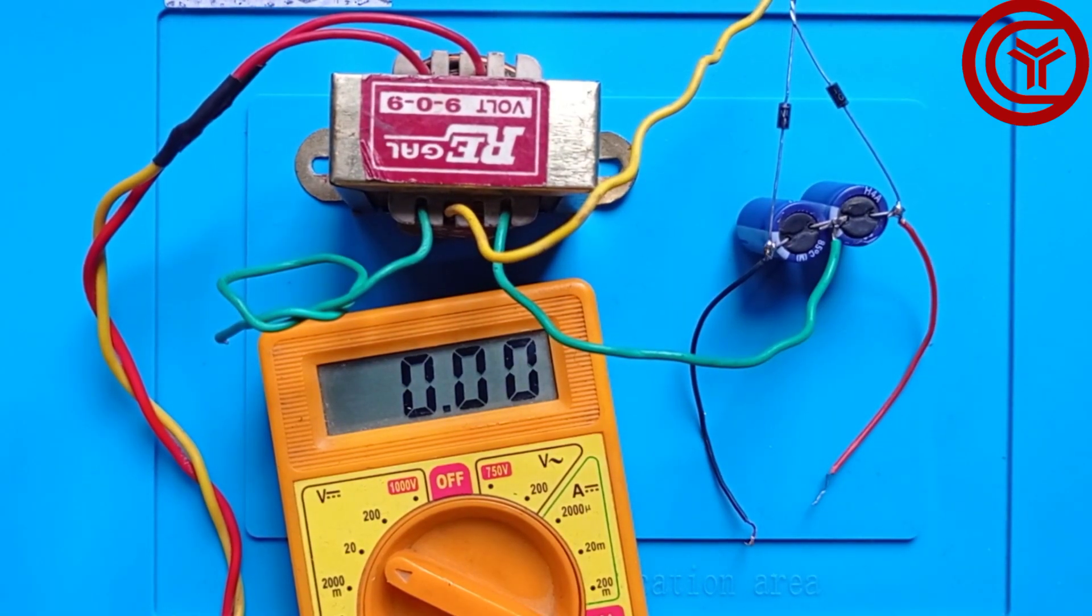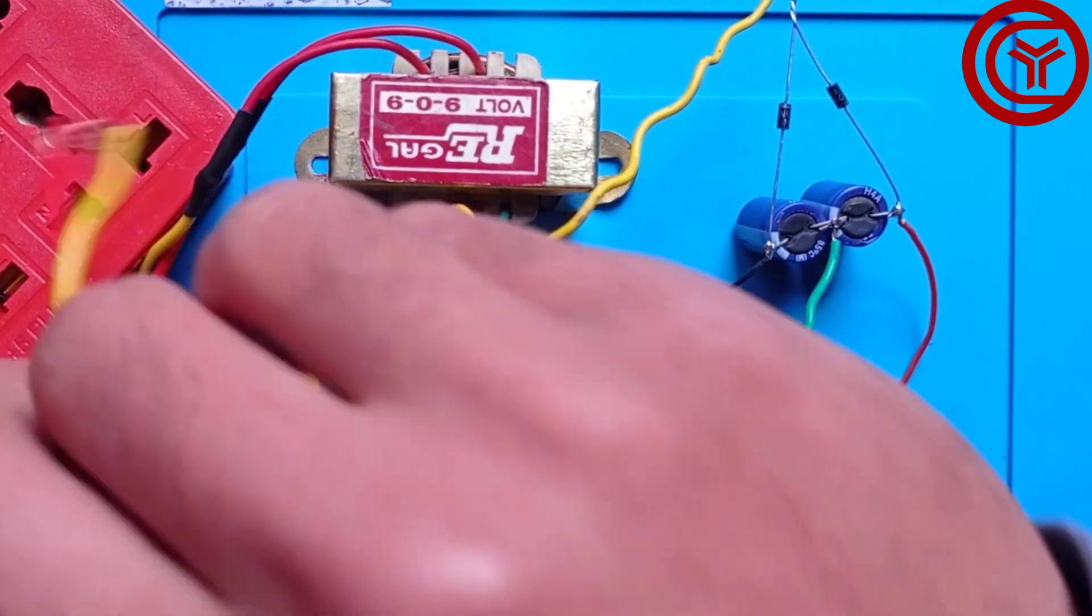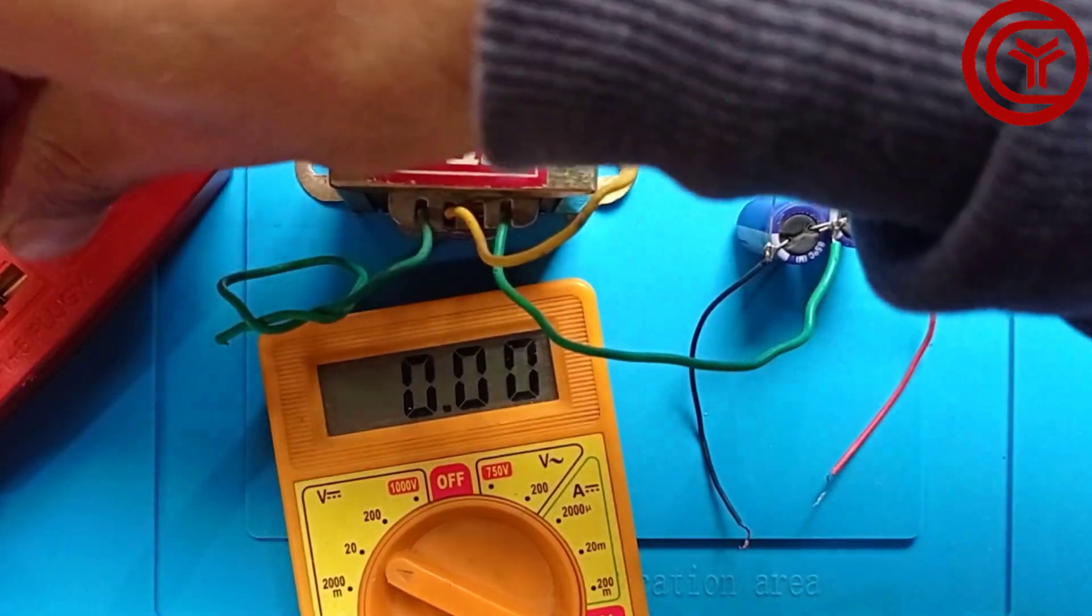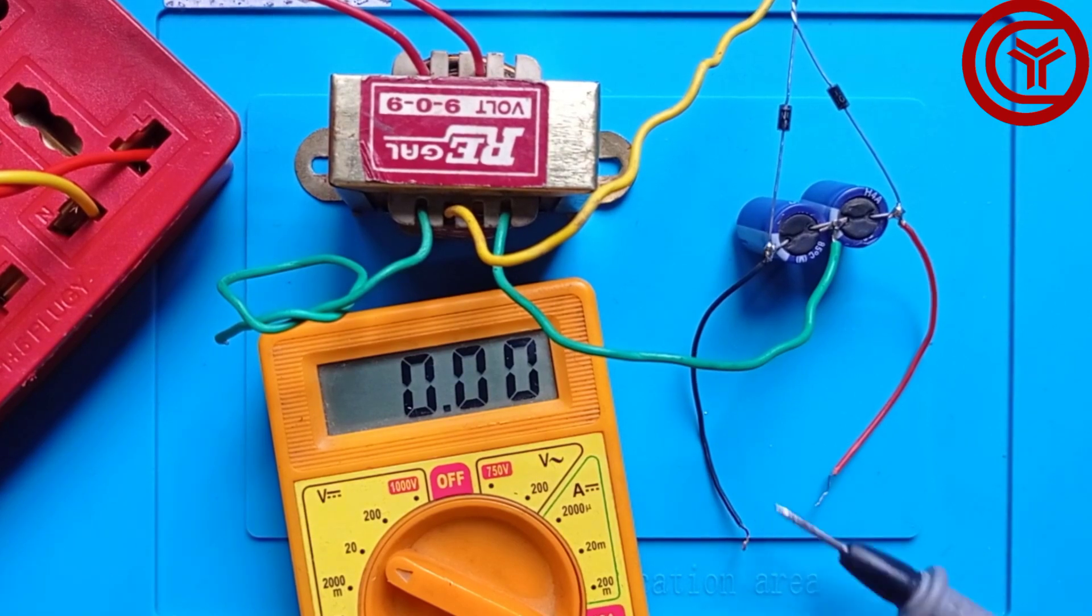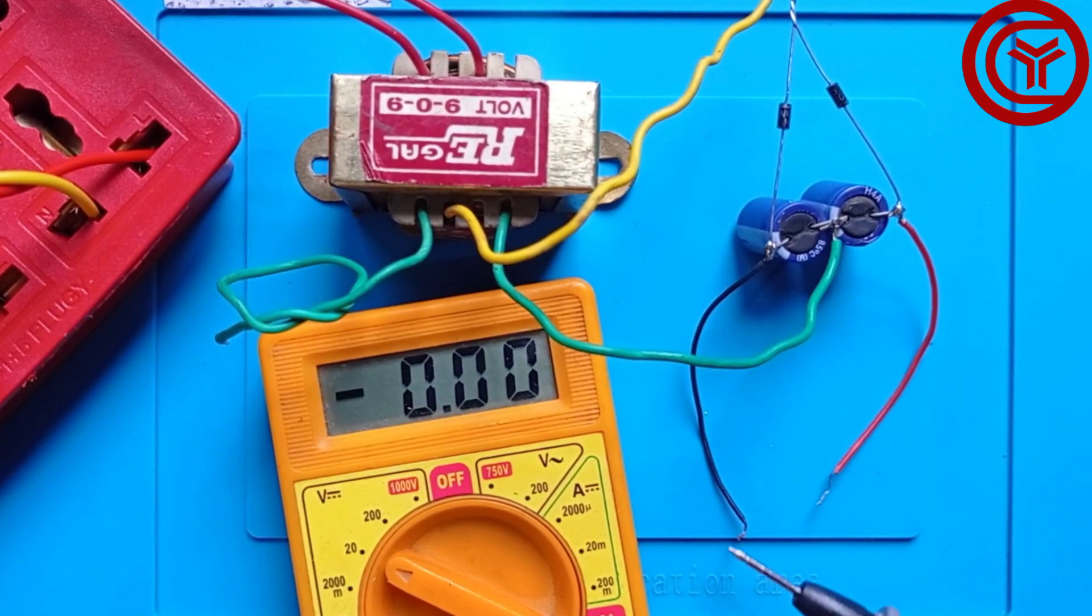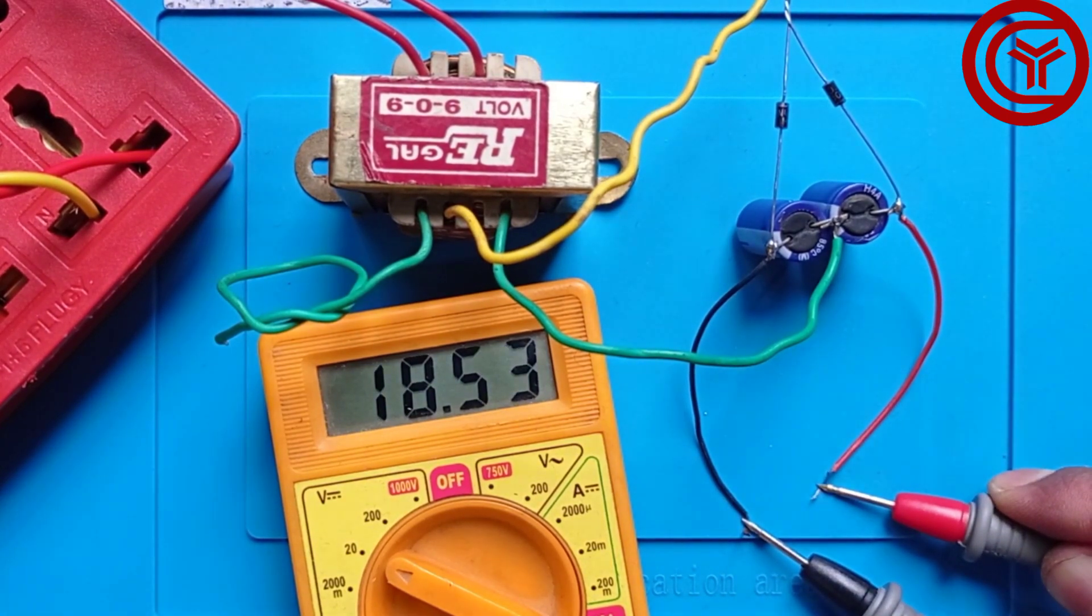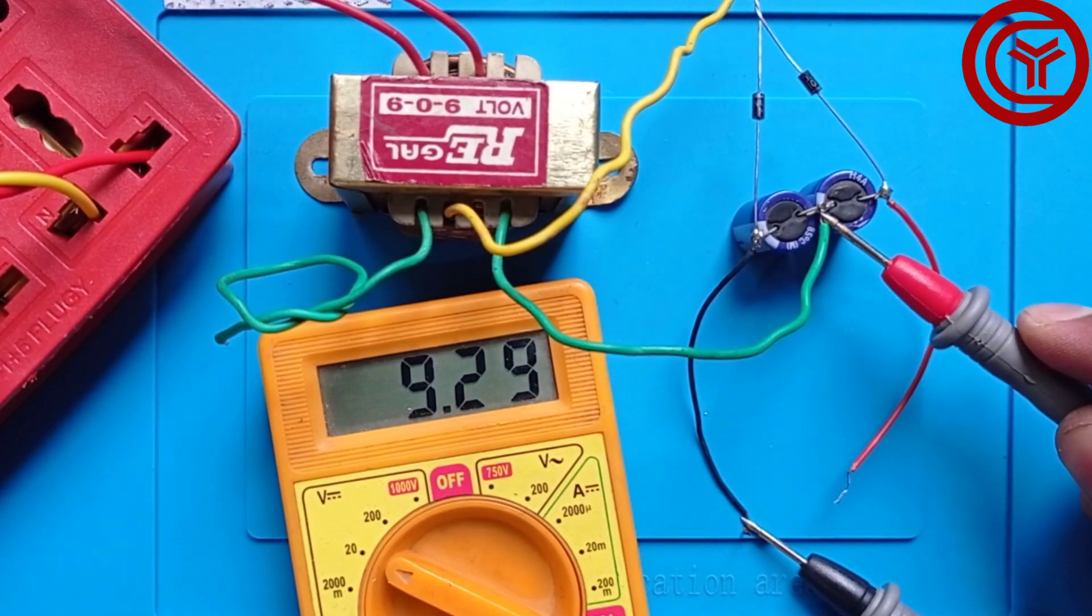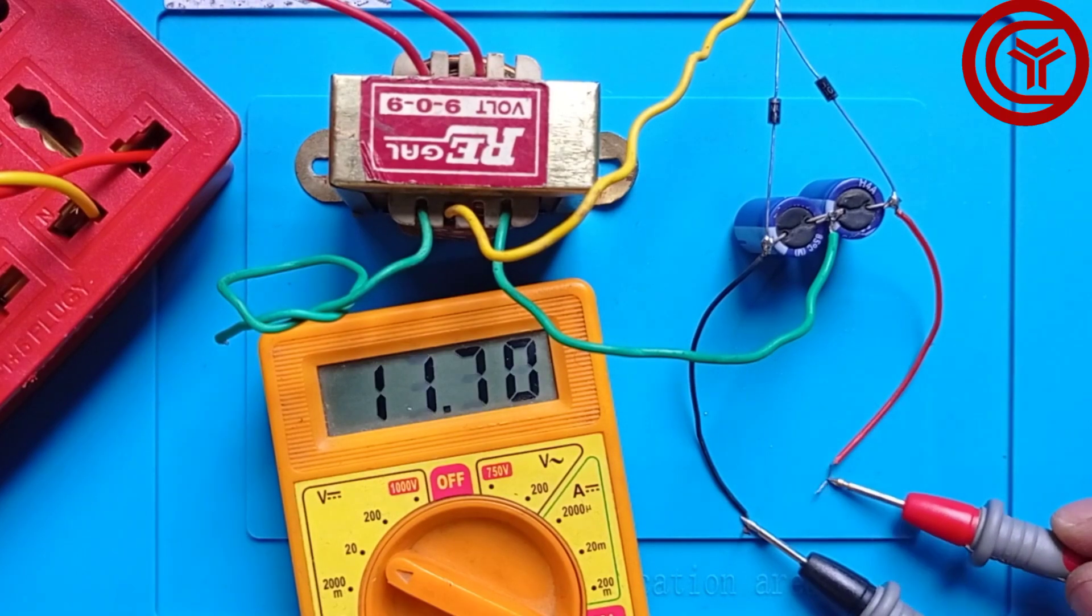Now we'll plug this transformer into AC. Now we'll test with the multimeter - the voltage will be 18 volts, and the input voltage is 9 volts. It's working pretty good.